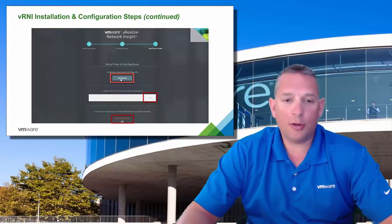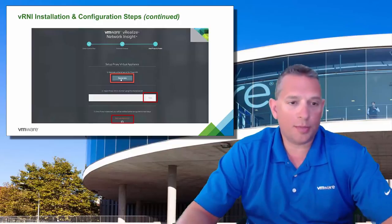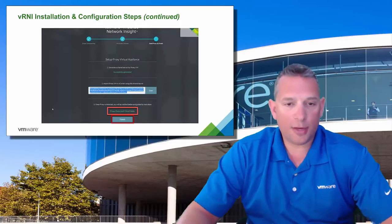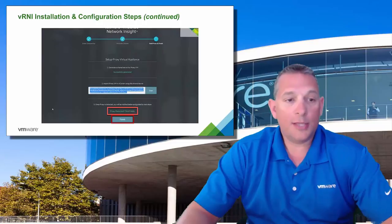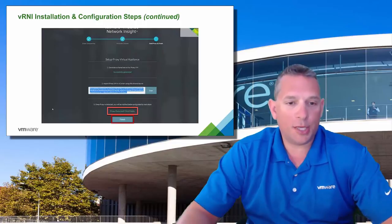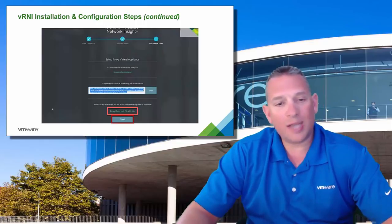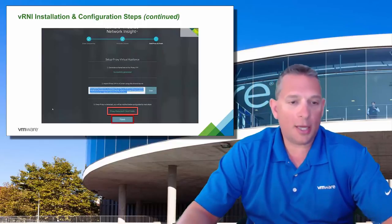At the bottom center of the screen, it currently reflects the status of 'not yet detected' for the proxy appliance, which is correct at this point. Now deploy the proxy appliance, making sure to select the same size configuration — medium or large — as you used for the platform appliance. During the proxy appliance deployment, it will ask for the pre-shared secret key — paste the key you copied from the platform interface. Once deployed, power it on and wait for it to come fully online. You should now see the status change to 'proxy detected,' then click the Finish button.